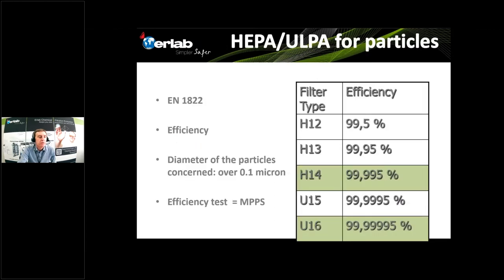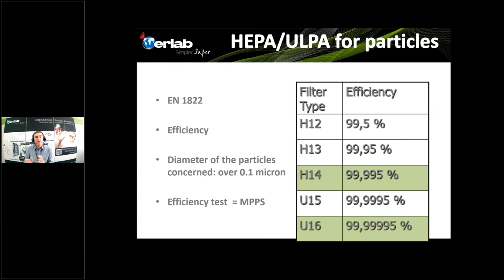The standard used to determine HEPA and ULPA filter performance is EN 1822. There is also an equivalent standard in the US. You will see small differences in efficiency values between the American standard and EN standard, but they are very similar.